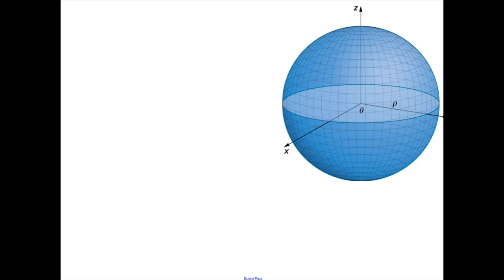So many of these formulas are interconnected — base times height gave us the volume of a cylinder, the cylinder led us to the cone, and now the cone has led us to the volume of a sphere. We know the volume of the sphere is 4/3 πr³. But what about the surface area?